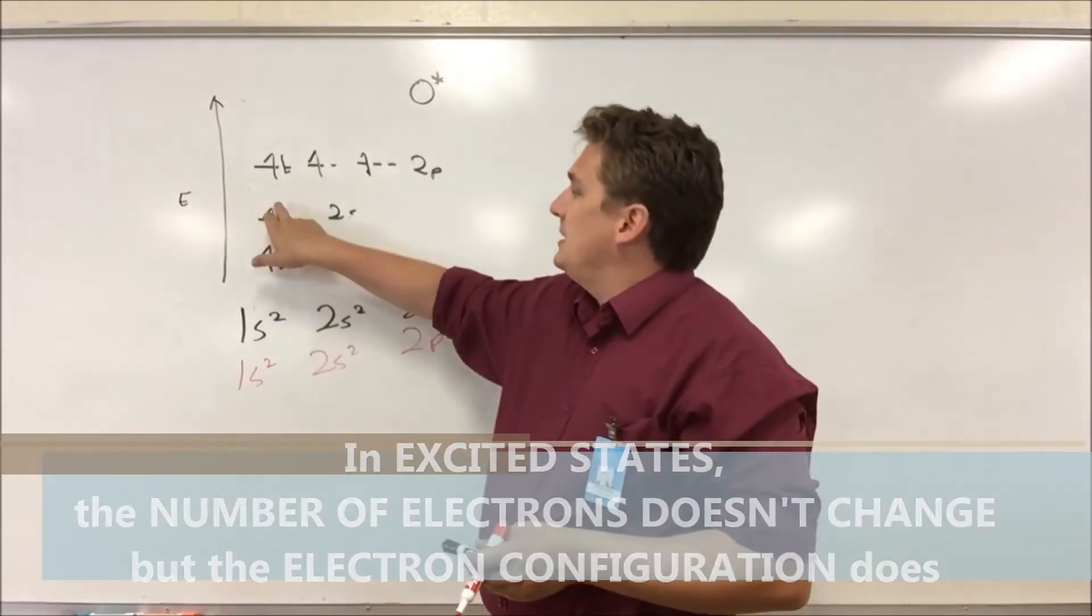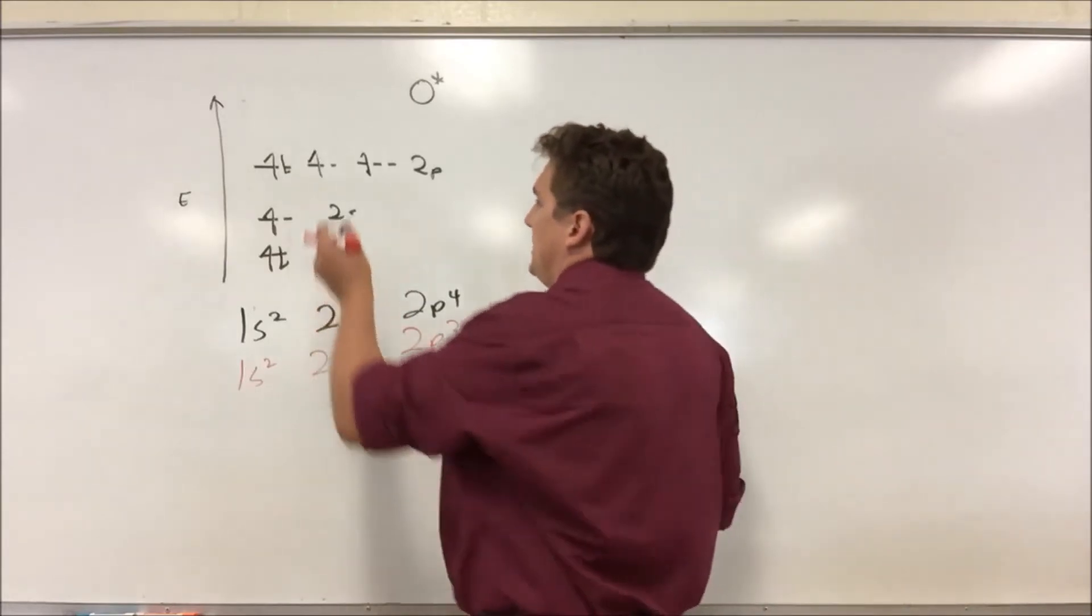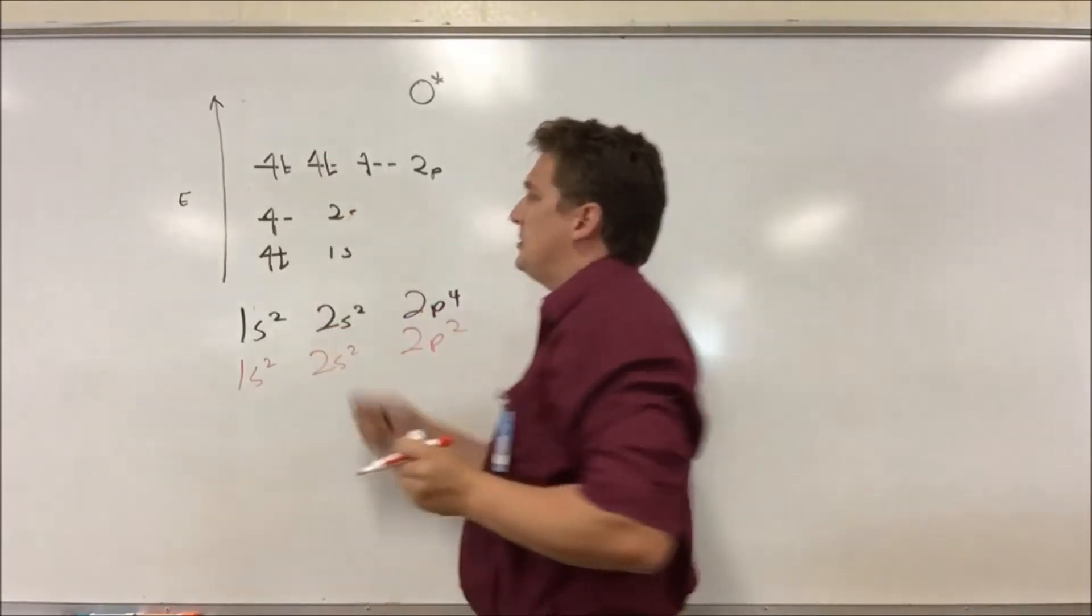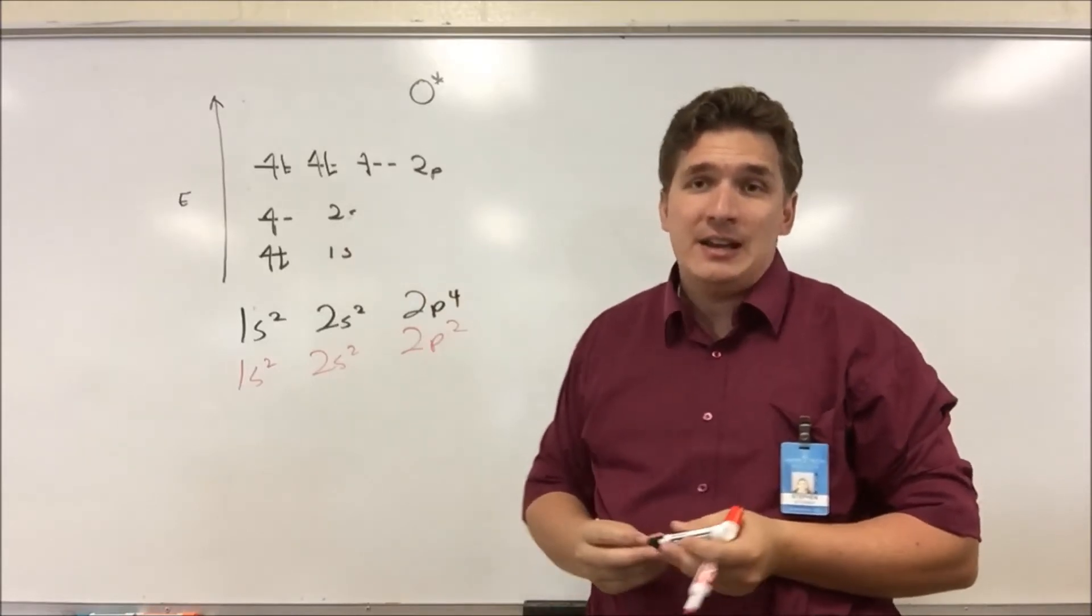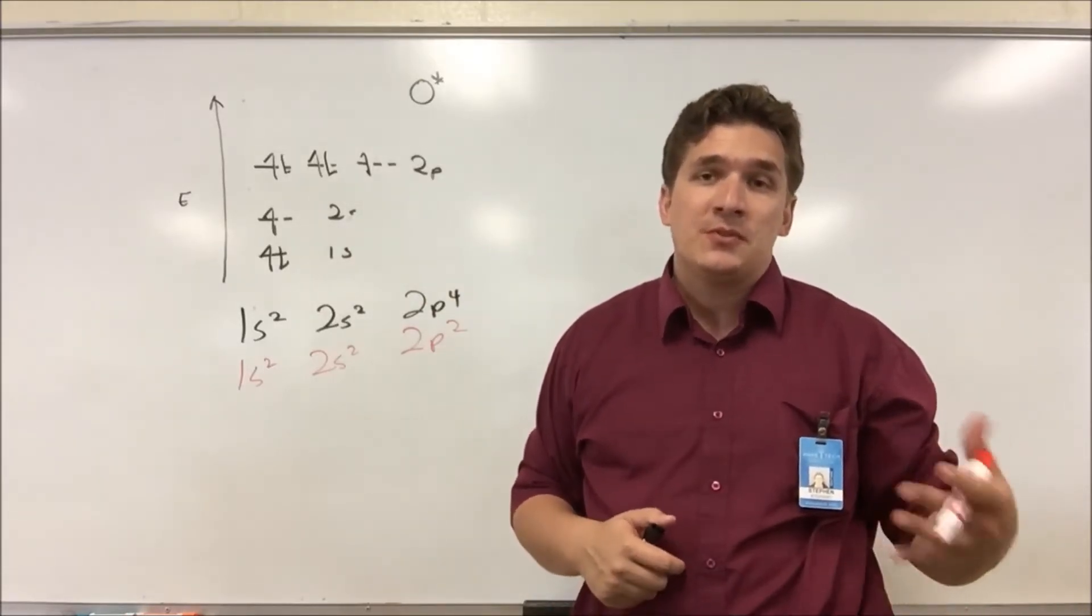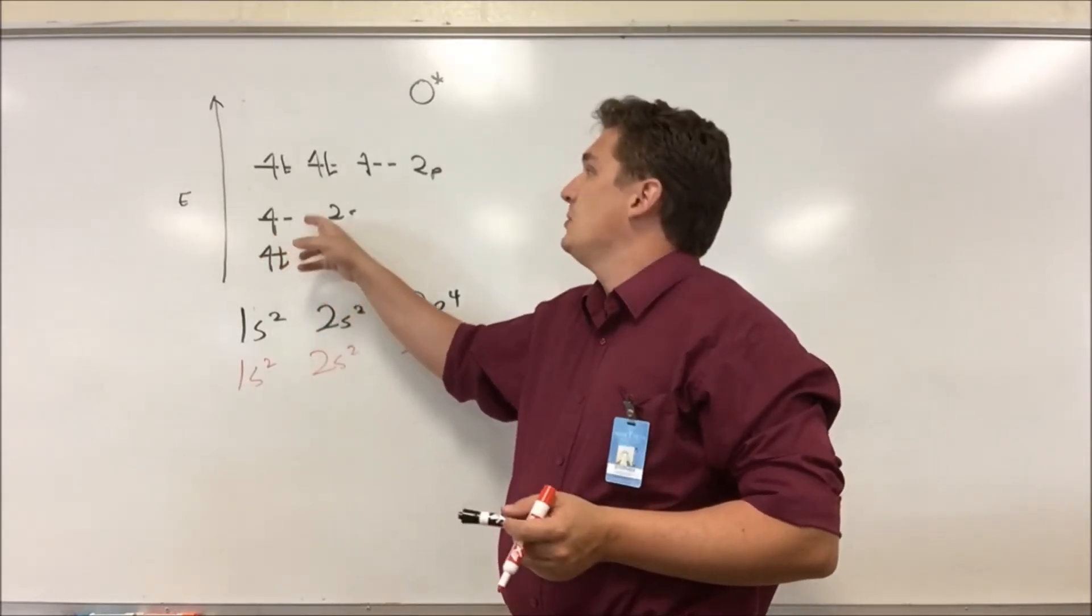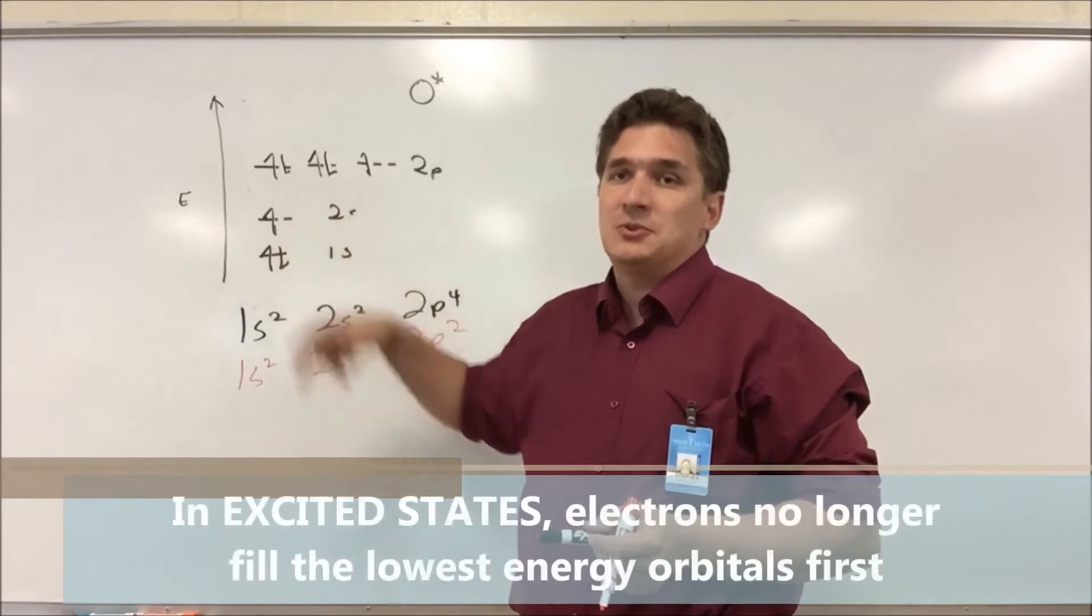But what's going to happen is that we're no longer going to have the lowest energy configuration. In this case, we're going to have an electron promoted from the 2s to the 2p. And you can see how this violates our rules from before. We said that electrons want to fill the lowest energy orbitals first and then work their way up. Well, in this case, we have an open spot in the 2s orbital. We can definitely take one of these 2p electrons and drop it down.